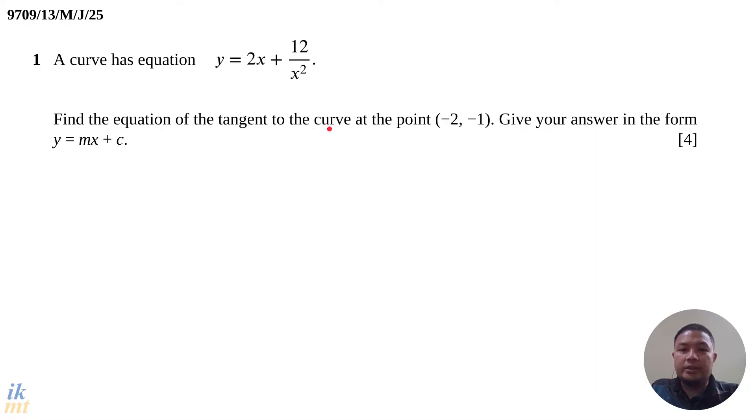Find the equation of the tangent to the curve at the point (-2, -1). Give your answer in the form y = mx + c. This is a four-mark question. Something like this can be done in less than four minutes if you know what you're doing.